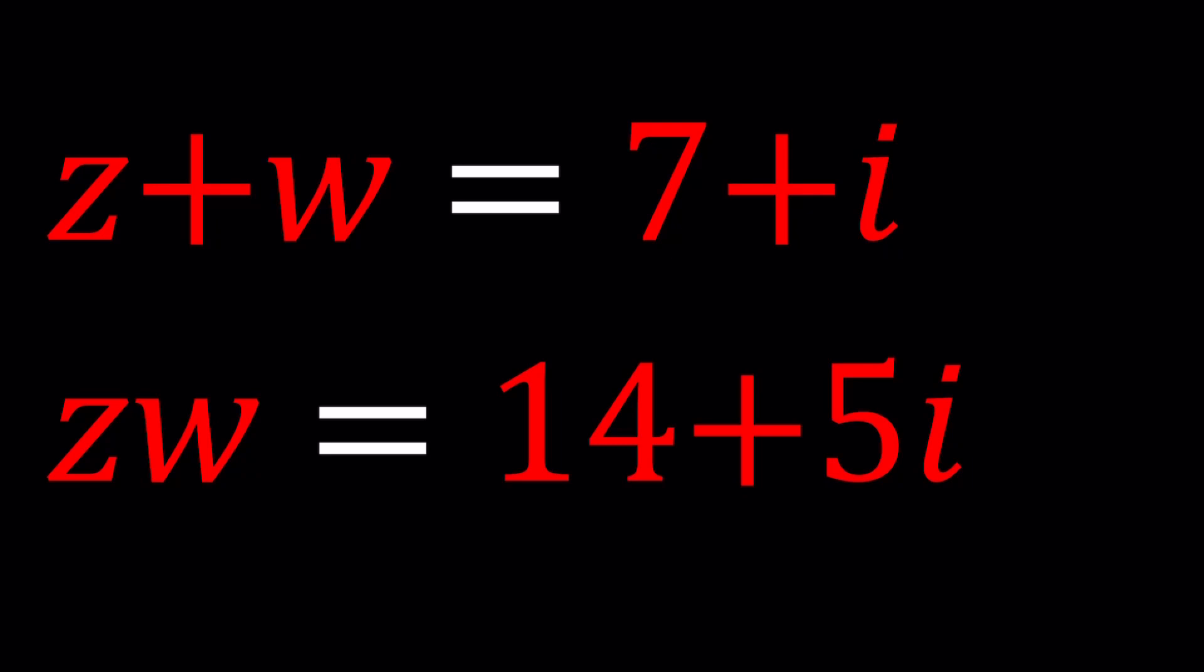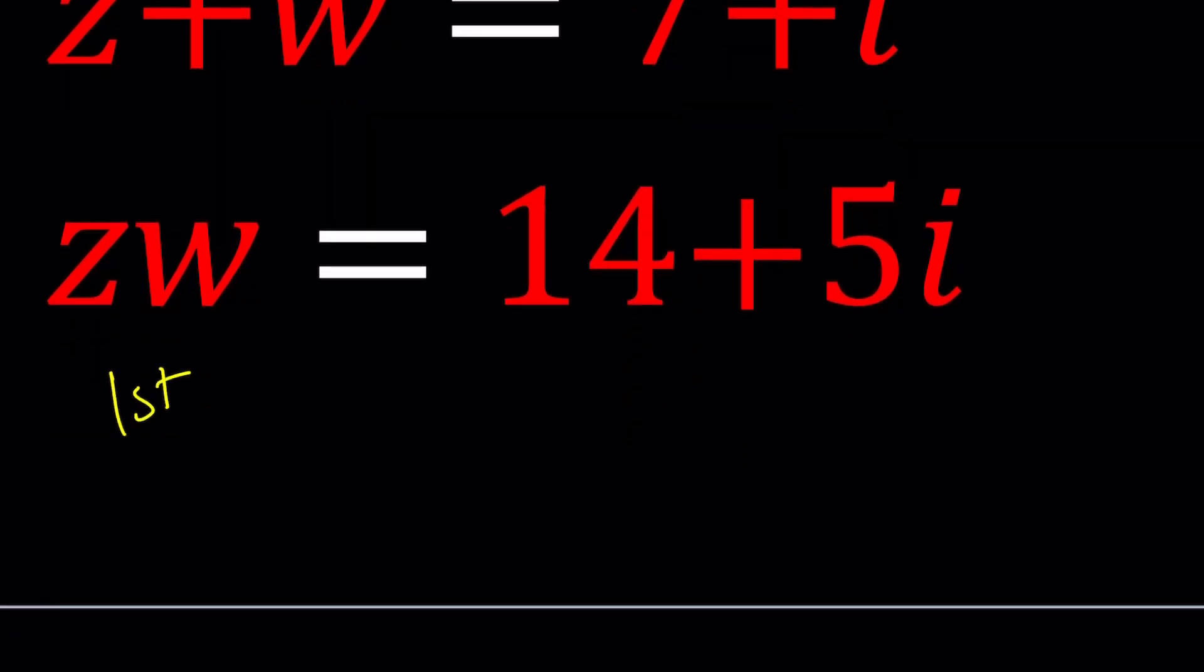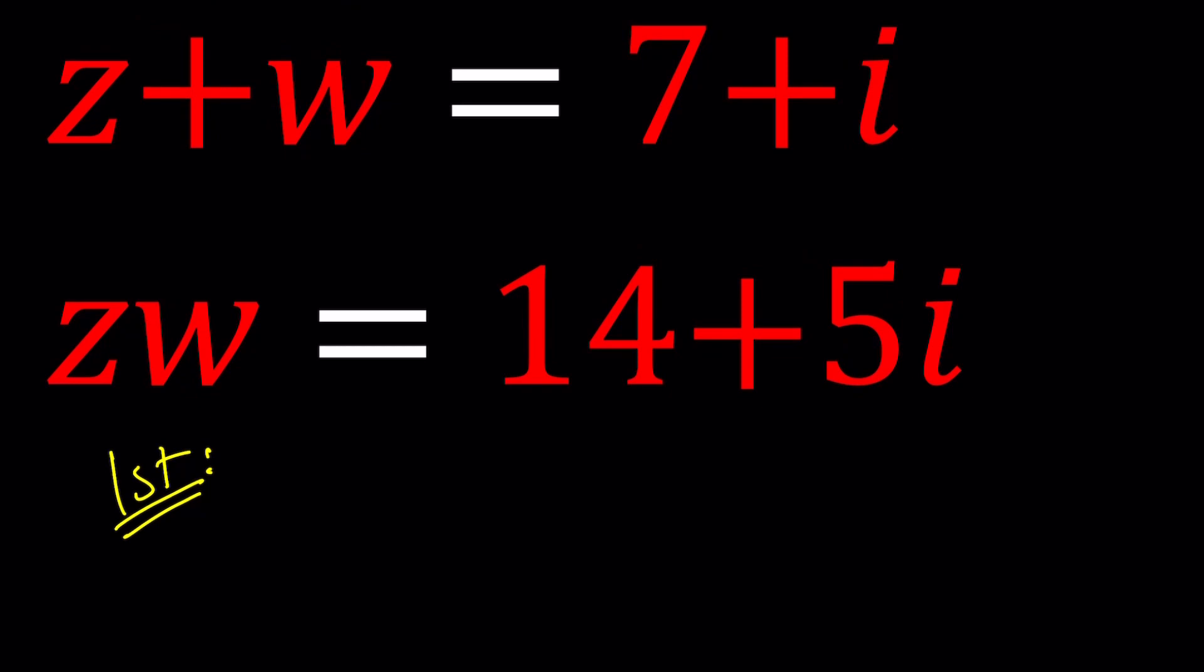Quick reminder, I is the number whose square equals negative 1. Now I'll be presenting two methods and the first one is going to be a little longer but I'm going to show you the outline. So for our first method, since Z and W are complex numbers,